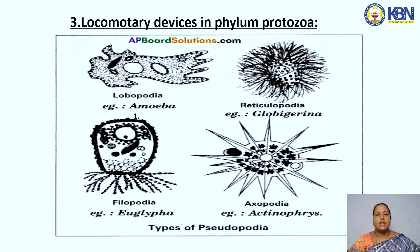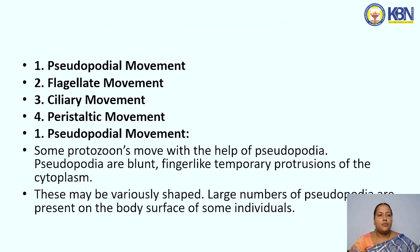Next, another topic is locomotory devices in phylum Protozoa. Here we have some pseudopodial structures. There are four types of locomotory organs: pseudopodial movement, flagellate movement, ciliary movement, and peristaltic movement.